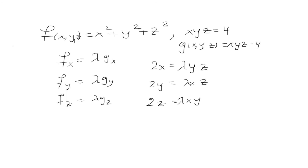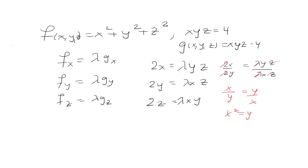Taking any two equations — let's start with the first two — we divide: 2x/2y = (lambda · yz)/(lambda · xz). The twos cancel, the lambdas cancel, and the z's cancel, leaving x/y = y/x. Cross-multiplying gives x² = y², so taking the square root: |x| = |y|.